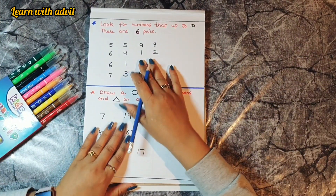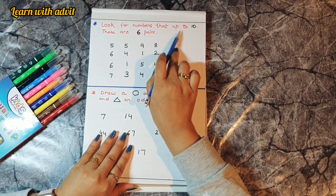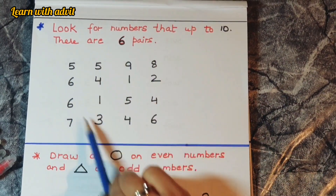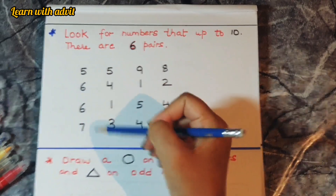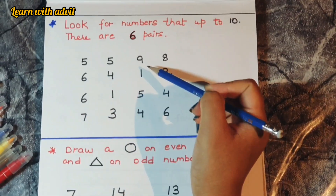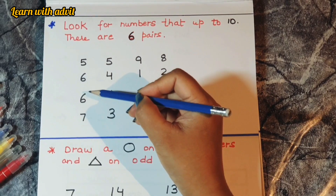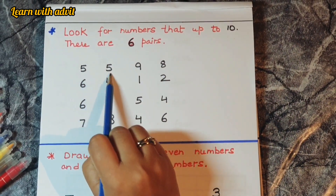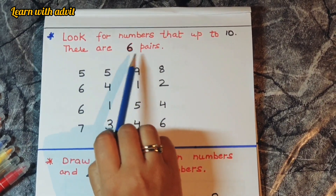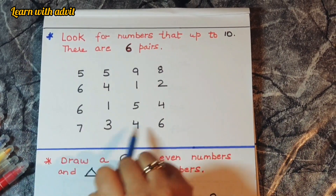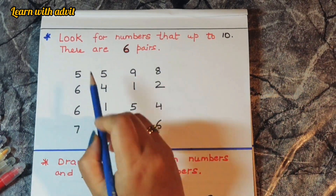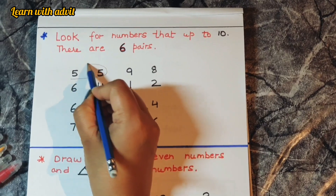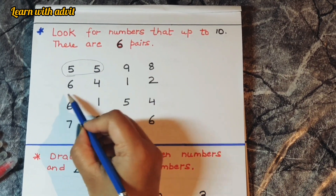In this sheet, kids look for numbers that add up to 10 — there are 6 pairs. There are some random numbers, and kids need to check diagonally, horizontally, and vertically. They need to add 2 numbers to get 10. For example, 5 plus 5 is 10, so they circle those. There is one hint given: the 6 pairs they need to find.